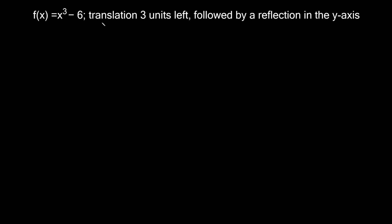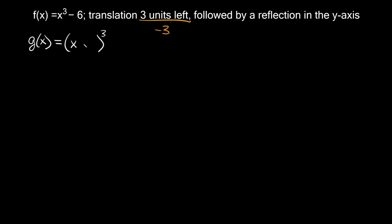The first transformation we have to apply says a translation three units to the left. Whenever you have to translate something to the left or the right, you need to put it inside a set of parentheses with your x's. So we're going to have x plus or minus some number, and then this exponent still stays as a cube. Now it says three units to the left. If you think of a number line, moving to the left means moving negative three spaces, so since we're going to move left three spaces, we want to put a positive three in here.